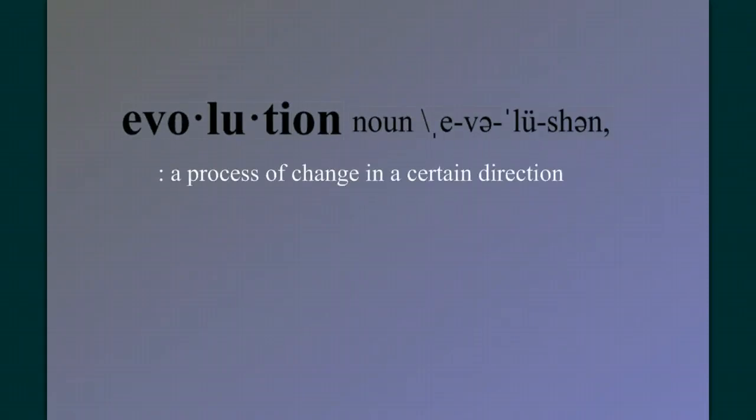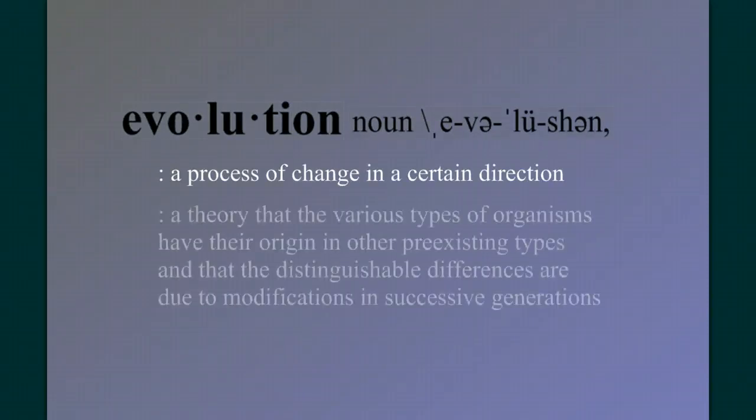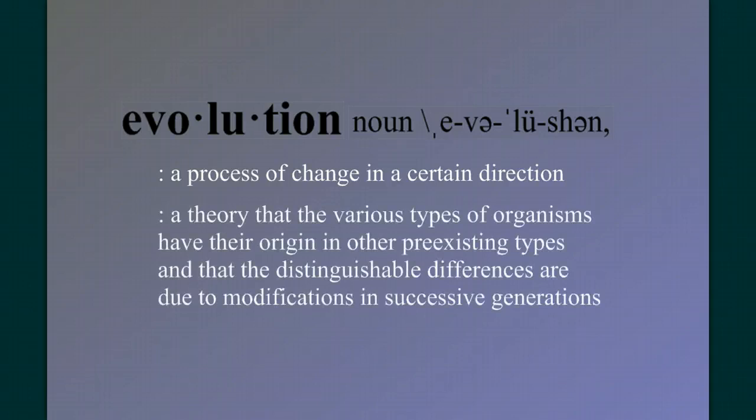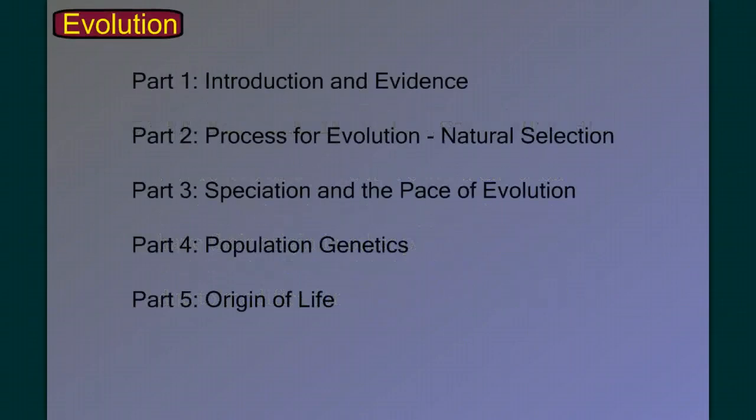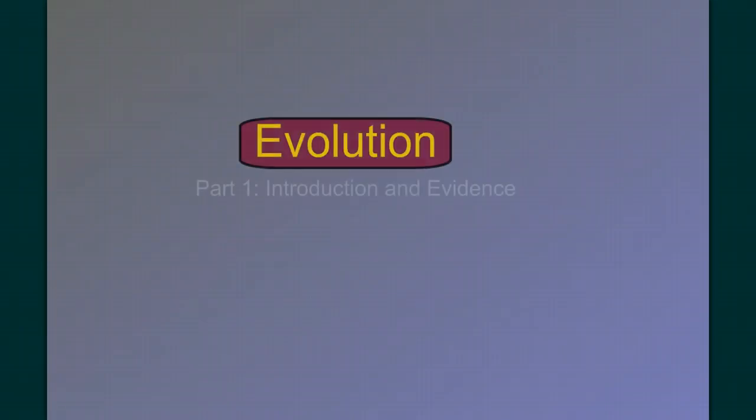Evolution: a process of change in a certain direction. A theory that the various types of organisms have their origin in other pre-existing types, and that the distinguishing differences are due to modifications in successive generations. Welcome to our five-part series on evolution. In this first part, we're going to introduce the ideas of evolution and discuss the evidences that support it.